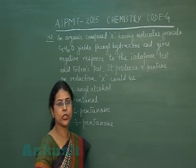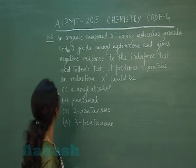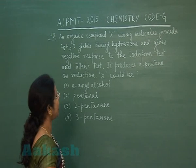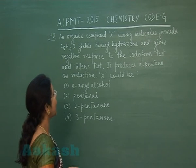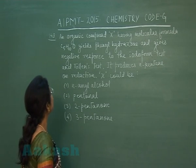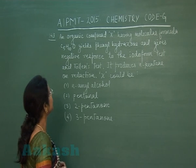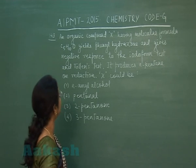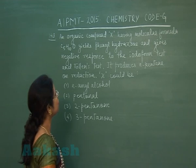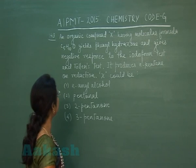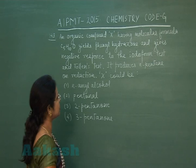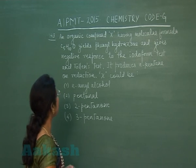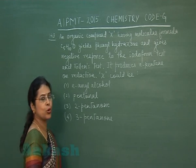Moving to the next question of this paper, question number 148. An organic compound X having molecular formula C₅H₁₀O yields phenylhydrazone and gives negative response to the Iodoform test and Tollens test. It produces n-pentane on reduction. X could be?